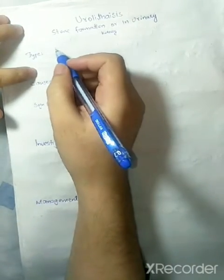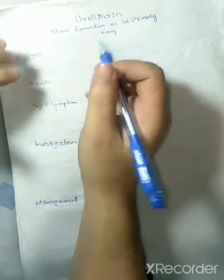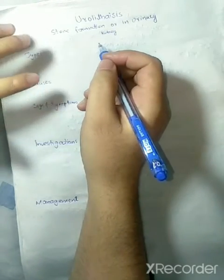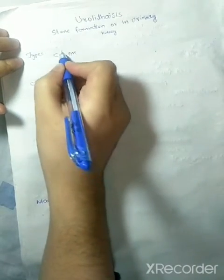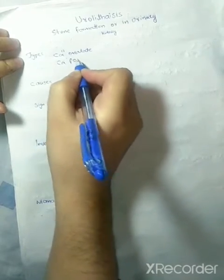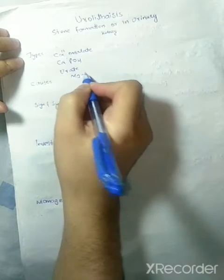Hi everyone, in this lecture we will discuss urolithiasis. Urolithiasis is stone formation in the kidney or urinary tract. There are mainly four types of stones: calcium oxalate, calcium phosphate, urate, and magnesium ammonium phosphate.